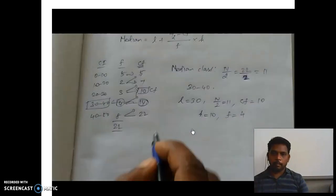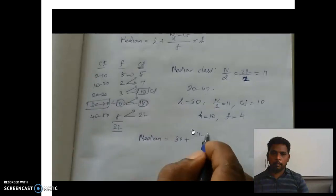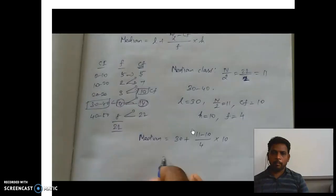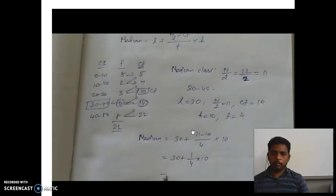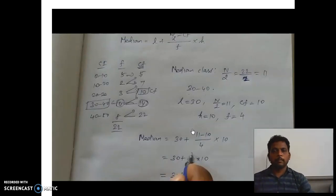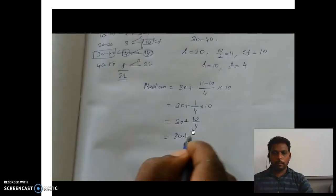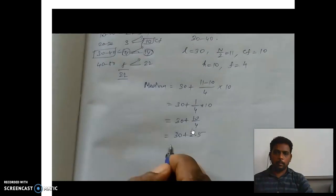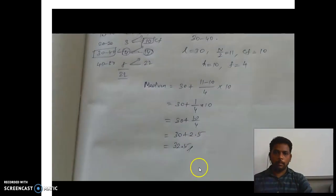Substituting in the formula: median equals L plus (n by 2 minus cf) divided by f, into h. That is 30 plus (11 minus 10) divided by 4, into 10. So 30 plus 1 by 4 into 10, which equals 30 plus 2.5, giving median equals 32.5. That is the value of the median and that is the procedure.